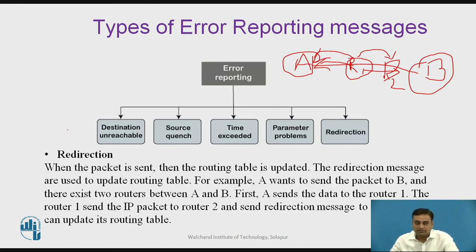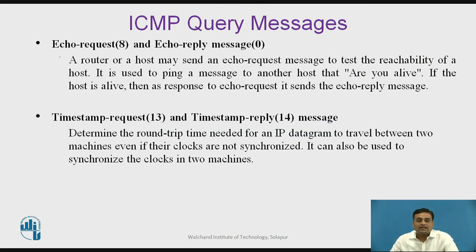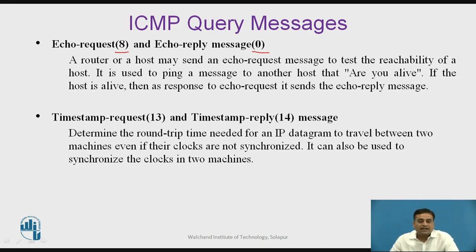The second category of ICMP messages is query messages, with two types: echo and timestamp. For echo request messages, the type field in the ICMP header contains value 8; for echo reply messages it contains value 0. A router or host may send an echo request to test the reachability of a host — this is used to ping another host. If the host is alive, it responds to the echo request with an echo reply message.